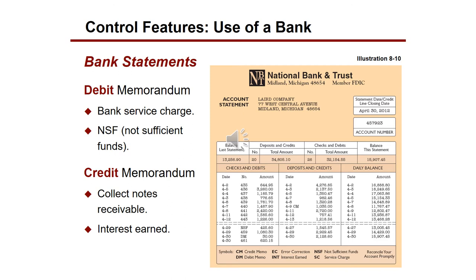Once a company has a bank account, they receive bank statements containing details of all financial activity over a specified period. These include debit memoranda such as bank service charges or non-sufficient funds, and credit memoranda such as collected notes receivable and interest earned. Company accountants use this statement to reconcile their records, ensuring what they have on their books matches the bank statement and correcting any errors.